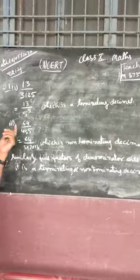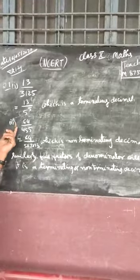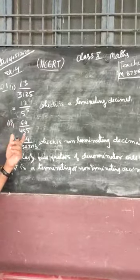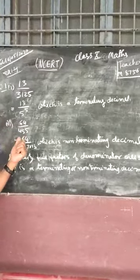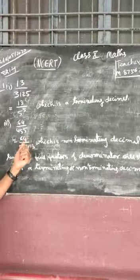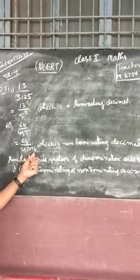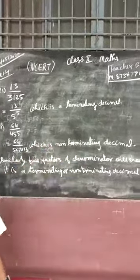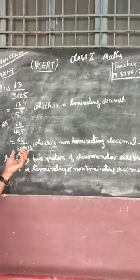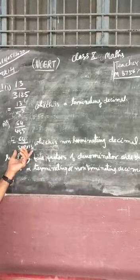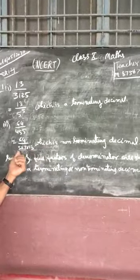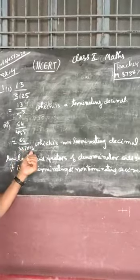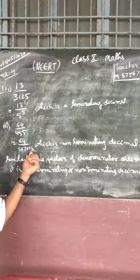Similarly, part 3 of Question 1 is 64 upon 455, which can be represented as 64 upon 5 × 7 × 13. This is a non-terminating decimal, as the denominator has factors other than 2 and 5 — specifically 7 and 13 are also factors of the denominator.